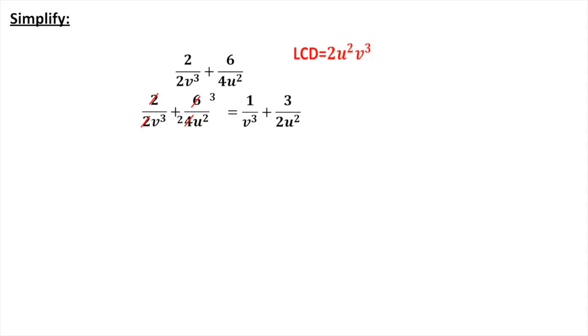That's going to be 2u squared v cubed. Now in order to obtain this lowest common denominator, and the denominator on this one, we've got to think of what we've got to multiply this one by. It's missing the 2u squared. So on this side I'm going to multiply top and bottom by 2u squared.